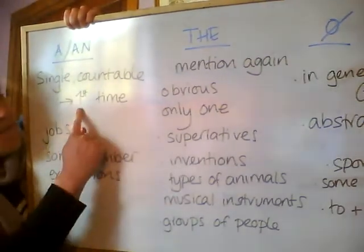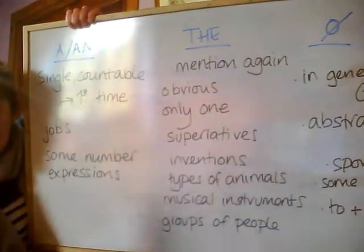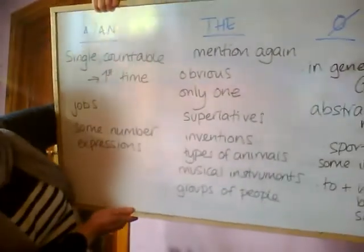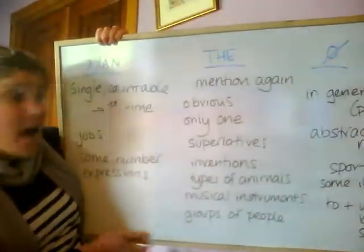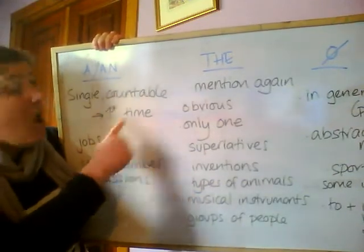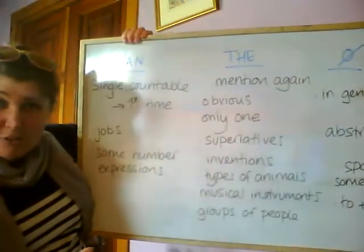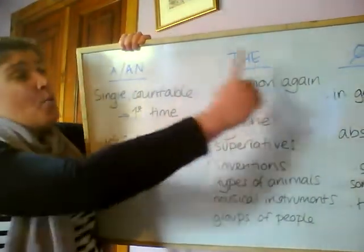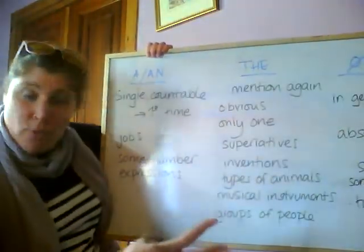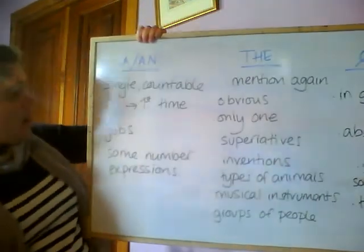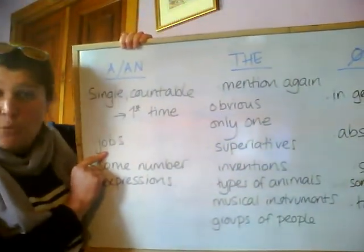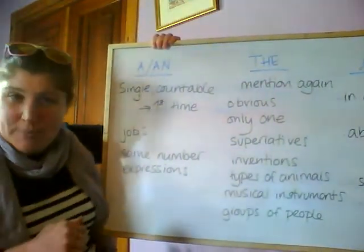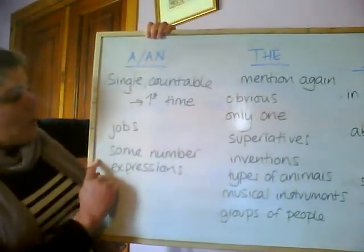When we talk about something for the first time, we use 'a' or 'an'. When we mention it again, we use 'the'. Look at this example: there is a bar in Santalla de Pena. The bar is called Casa Cartella. So the first time I talk about the bar I use 'a' or 'an', and when I talk about it again the second, third, or fourth time, we use 'the'.